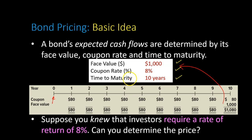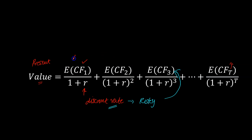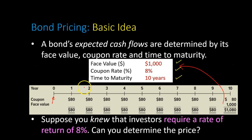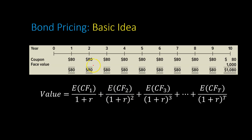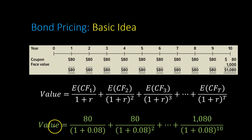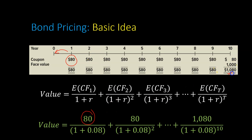Suppose you knew that. Then essentially, in this particular equation, you know the expected cash flows from the face value, the coupon rate, and the time to maturity. And I'm also telling you the rate of return that investors require — in other words, the discount rate. With all that information, can you determine the price? Absolutely, you can. All you have to do is plug in these numbers into this equation. Specifically, value is 80 divided by (1 + 0.08) — because 80 is the first cash flow and the discount rate is 8% — then you discount the second cash flow, and so on. The last cash flow is $1,080, and that gets discounted back 10 years.